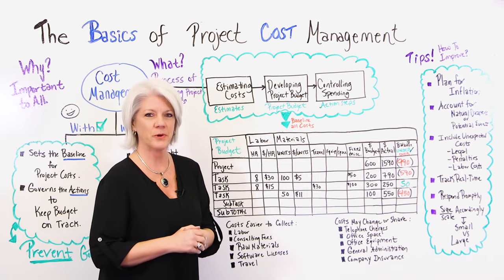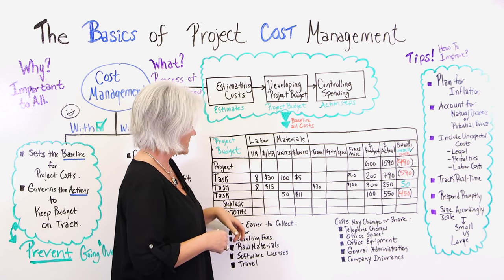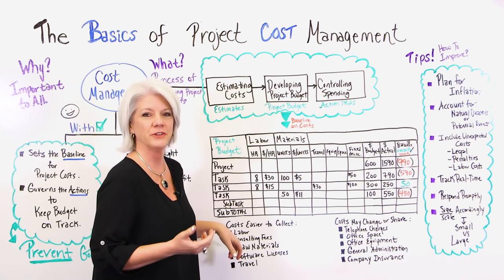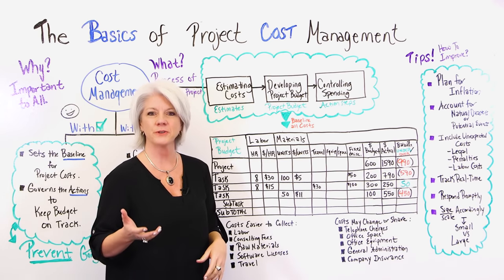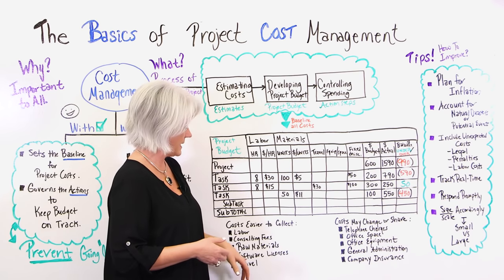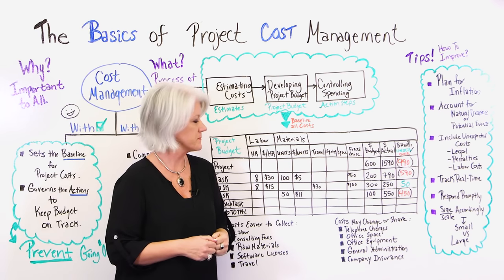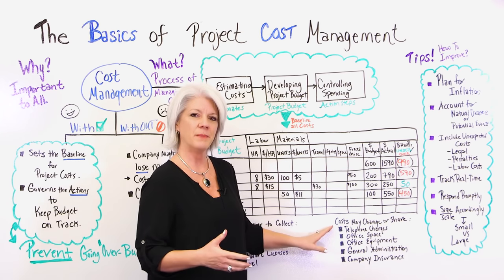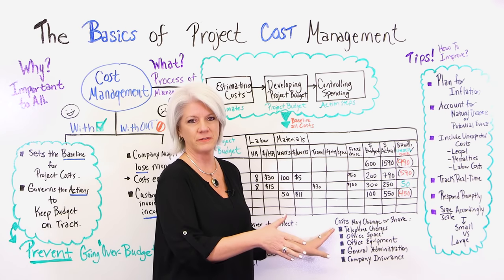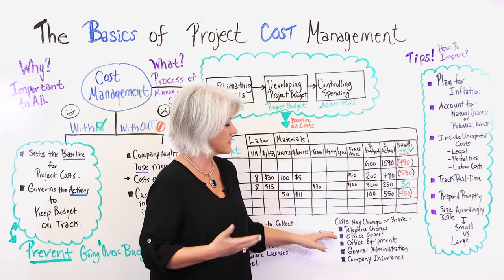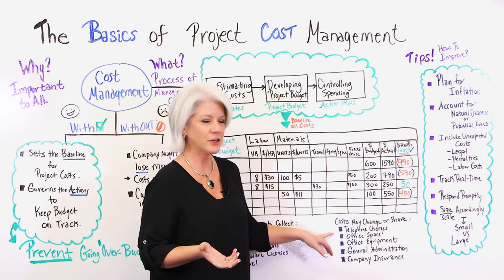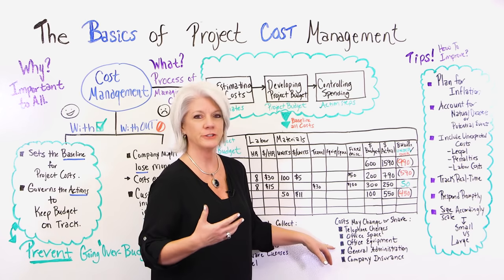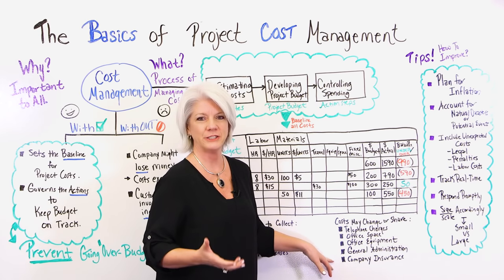There are a few things I want to point out on the template. Some costs are easier to collect, like your labor costs, consulting fees, raw materials, software licenses, and travel costs. And then some of the costs may change, or they may be shared among other projects, or even carry over to other projects. Some of those look like your telephone charges, office space or office equipment, general administration, and company insurance.